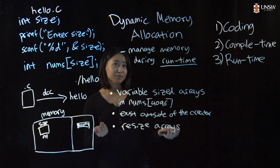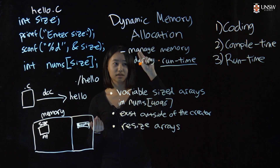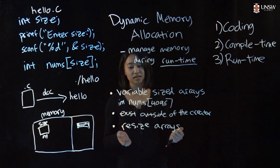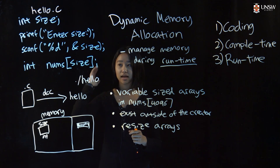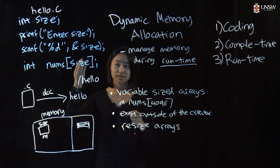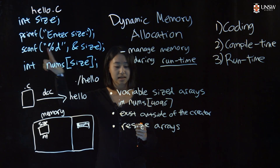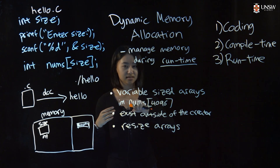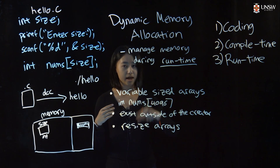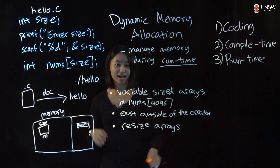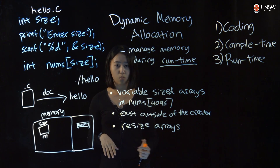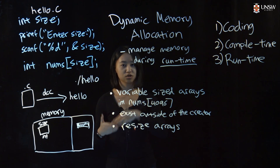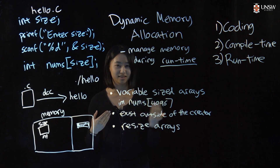So just to recap: dynamic memory allocation is a process of managing memory during runtime. The reason why it's important is because you can create arrays of a size that the user gets to decide, you can make variables that exist outside the function that created them, and you can resize arrays. If you keep watching to my next video, I'll walk you through the entire process of dynamic memory allocation using some diagrams to give you a better understanding.